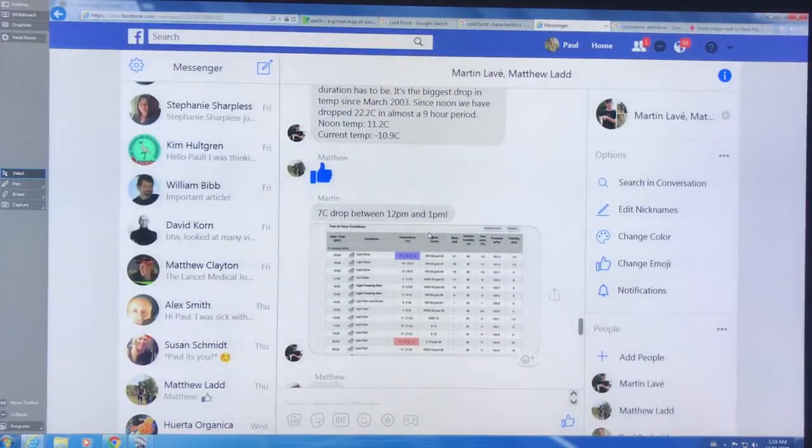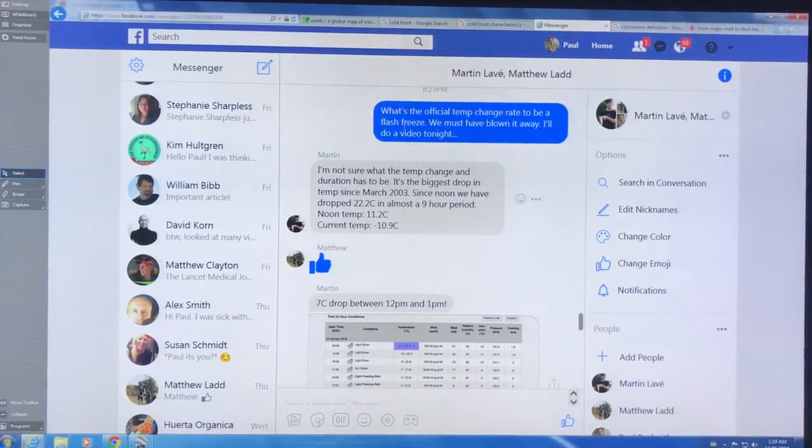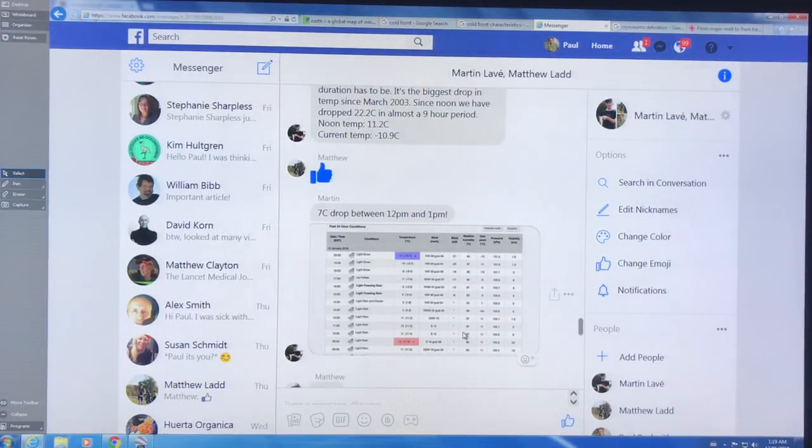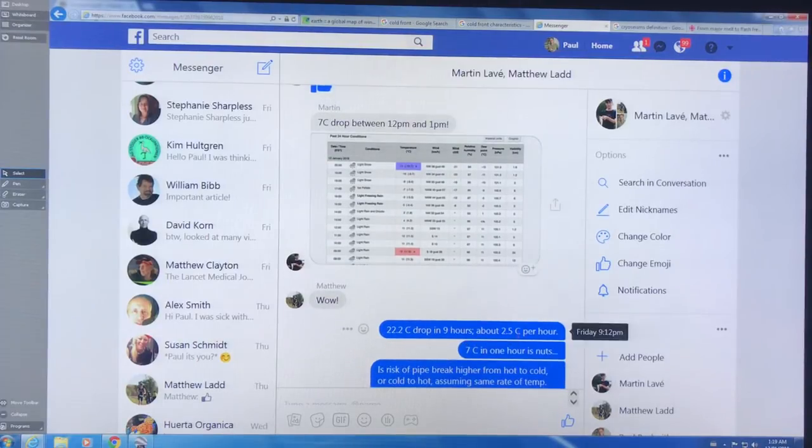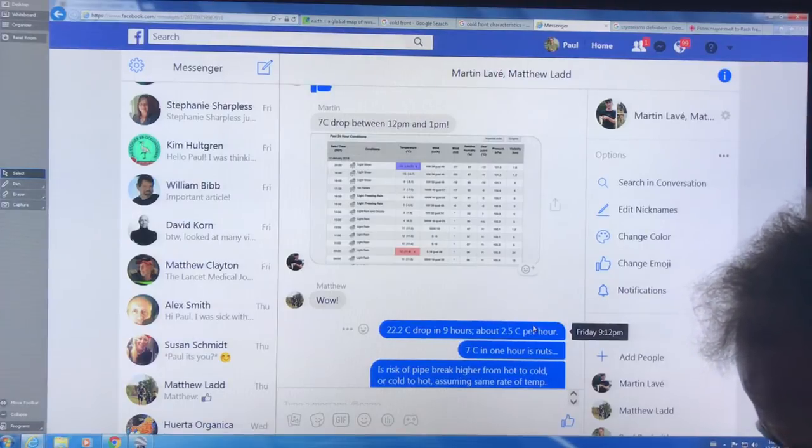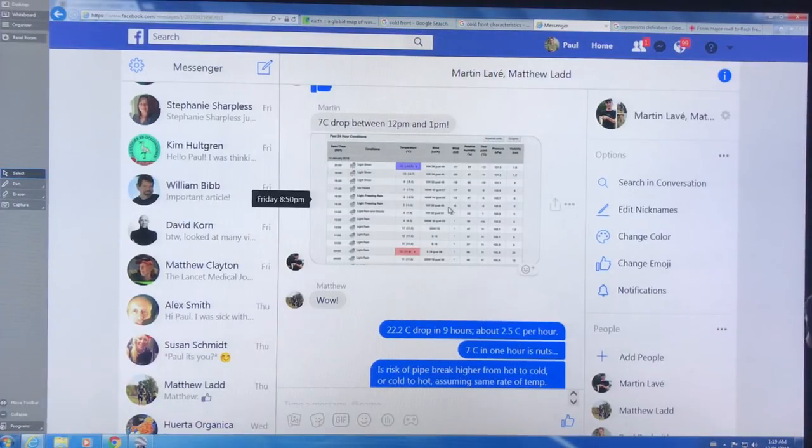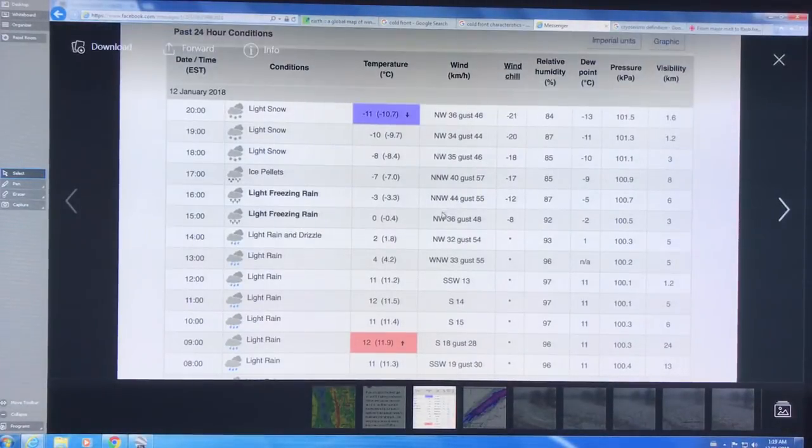Let's have a look at some of the details in Ottawa today. This is a map here. Noon temperature 11.2 degrees Celsius. Current temperature, and this was about 8:30 tonight, it was minus 10.9 Celsius. That's a huge swing, 22.2 Celsius in a nine hour period. That's two and a half degrees Celsius per hour. If we do the conversion to Fahrenheit, that's about four and a half degree Fahrenheit change per hour.